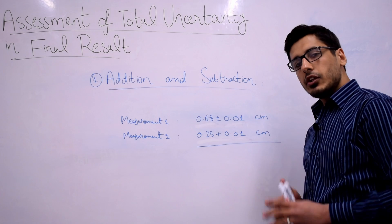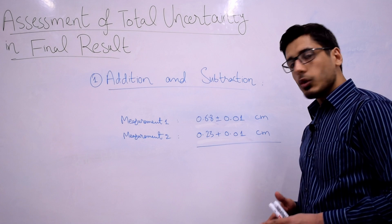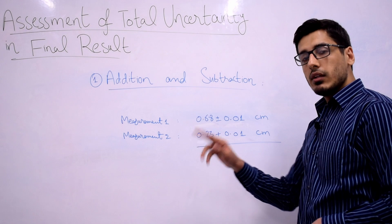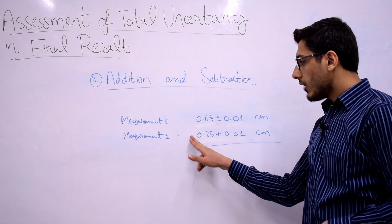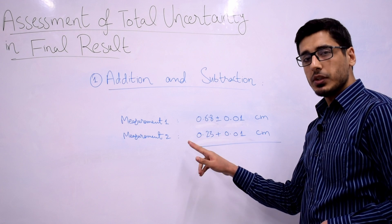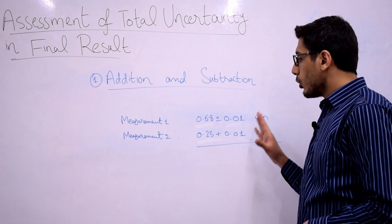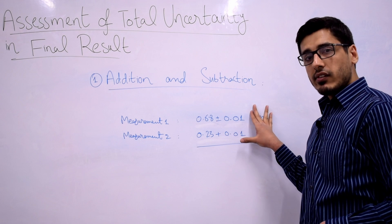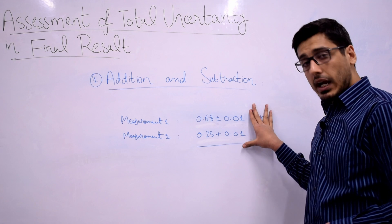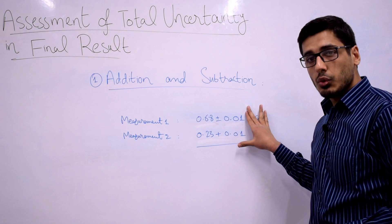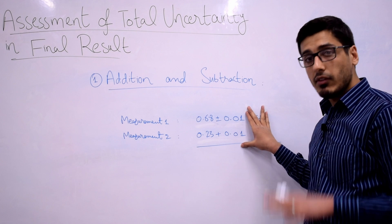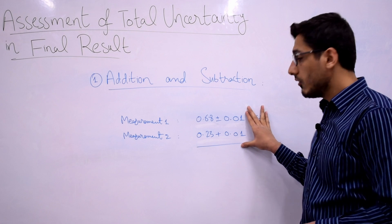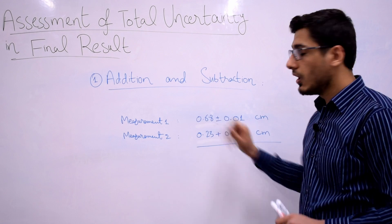As I explained, the rule applies either way — whether I am adding or subtracting these two measurements. In both cases, calculating the uncertainty requires that I add the two absolute uncertainties. I will not subtract them in any case, even if I am subtracting the measurements.